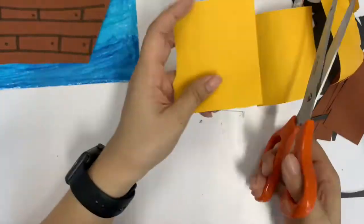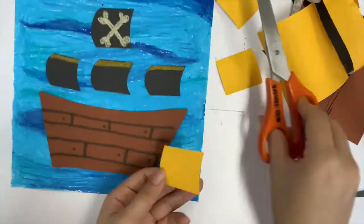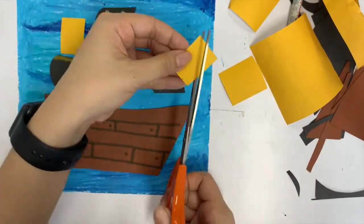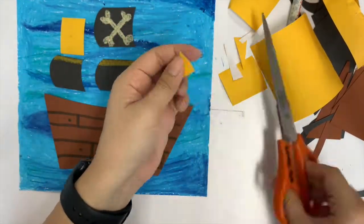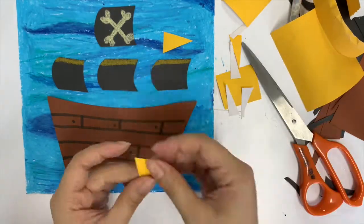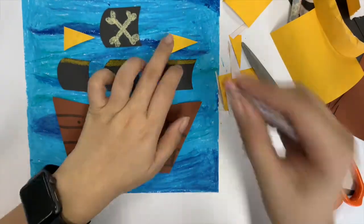Now grab the yellow paper. I'm going to cut a small flag and put them on top of the sail wings, but I'm going to do just two of them.